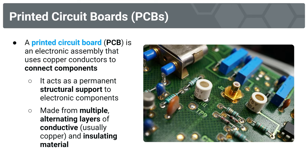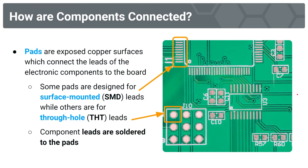So how are components connected to the board? We have pads — exposed copper surfaces which we connect the leads of the electronic components to. We do so by soldering the leads to the pads. Some pads are designed for surface-mounted or SMD leads. If you remember from several lectures back on integrated circuits, we talked about different packaging for components: surface-mounted and through-hole.